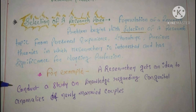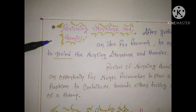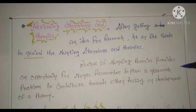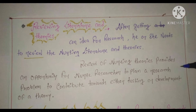The second step is reviewing literature and theories. After getting an idea for research, the researcher needs to review nursing literature and theories. Review of nursing theories provides an opportunity for the nurse researcher to plan a research problem and contribute towards either testing or development of a theory. After you decide what your problem is and what you want to solve, the next thing you do is review what theories say about that particular problem, so you can develop or contribute to that theory through your current research.